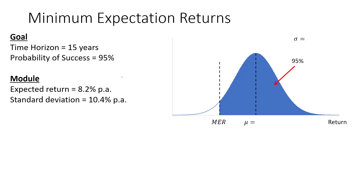Now let's look at an example. The client has a goal with a time horizon of 15 years and a probability of success of 95%. We have a given module with an expected return of 8.2% per year and a standard deviation of 10.4% per year. On the diagram, we have the mean return and the minimum expectations return to the left, with 95% as the shaded area. To calculate the minimum expectation returns, we first need to adjust the expected return and the standard deviation for the time horizon — these are the annual expected return and the annual standard deviation.